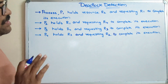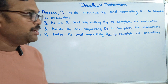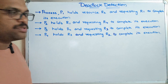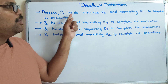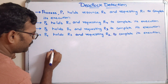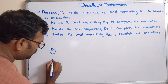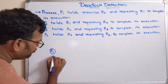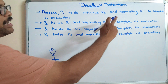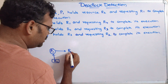Let's look at an example scenario to draw the resource allocation graph and the corresponding wait-for graph. Here P represents a process and R represents a resource. Process P1 holds resource R2 and is requesting R1 to complete its execution. The arrow toward the process means R2 is allocated to P1, and the arrow toward the resource means P1 is requesting R1.